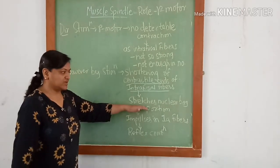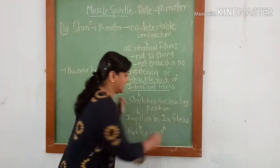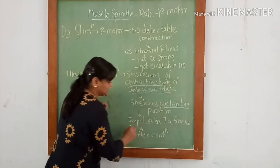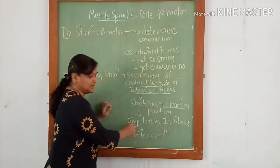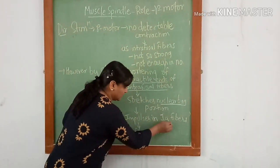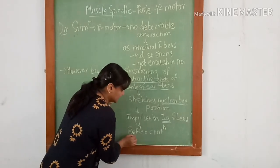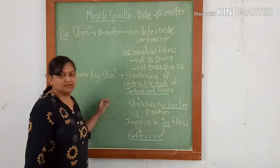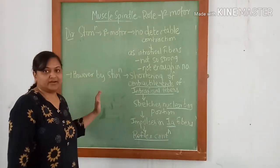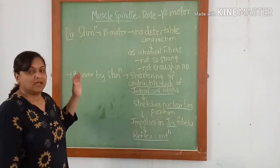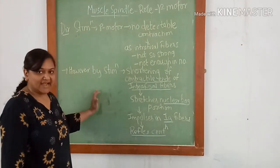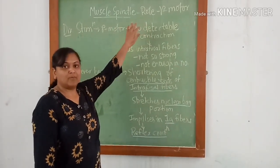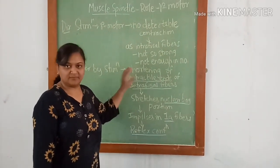This stretches the nuclear bag portion. Thereby there is generation of impulse in 1A fibers which leads to reflex contraction of the muscle. Thus the muscle gets contracted by the alpha motor neurons directly and indirectly by gamma motor neuron via the muscle stretch reflex.